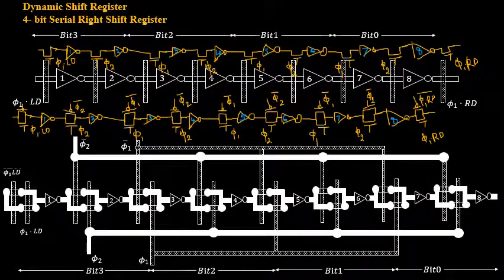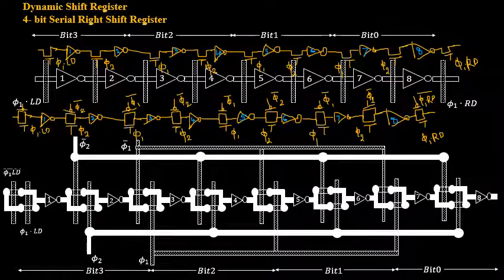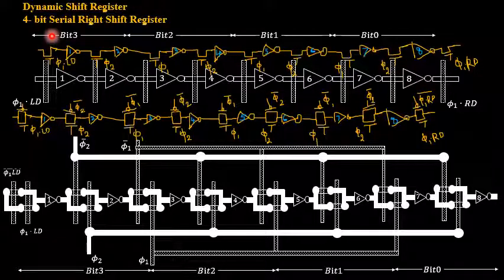Hello everyone. In this presentation we will see how a 4-bit dynamic shift register works. We are already familiar with the inverting type as well as non-inverting type of dynamic shift register wherein we have considered one single bit. Now if I consider multiple bits, here I have used the design in terms of a 4-bit dynamic shift register which is going to perform a right shift operation, depending upon the clock cycles φ1 and φ2 and the loading sequence.